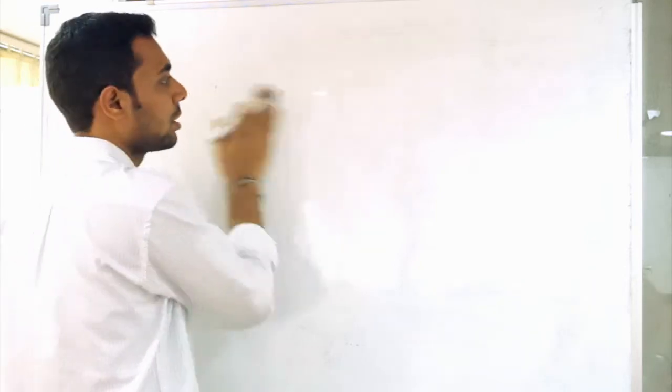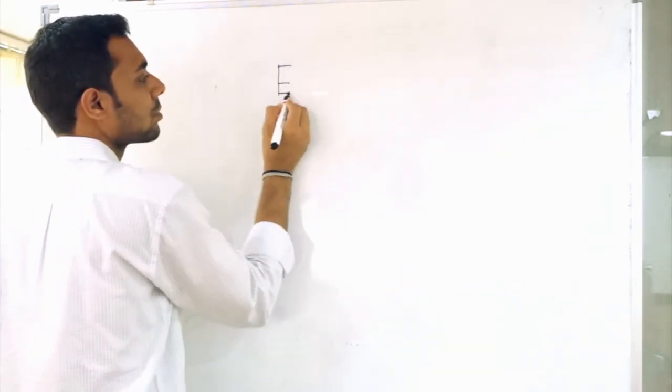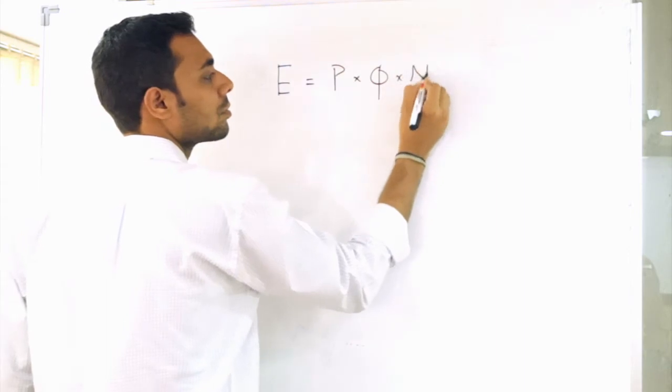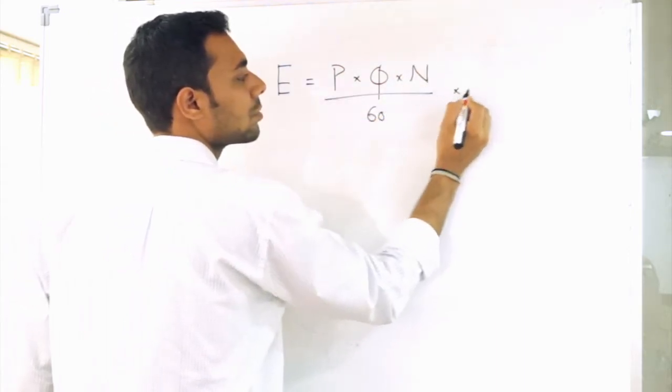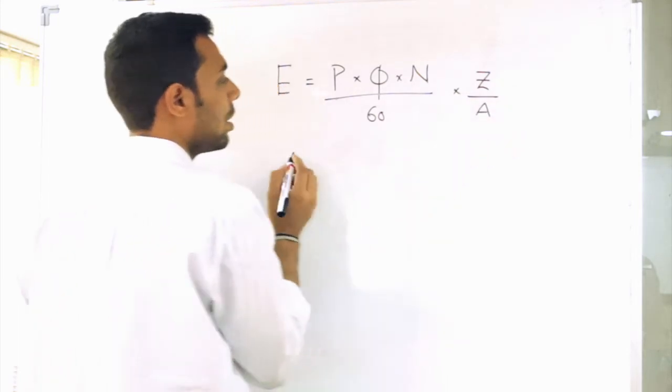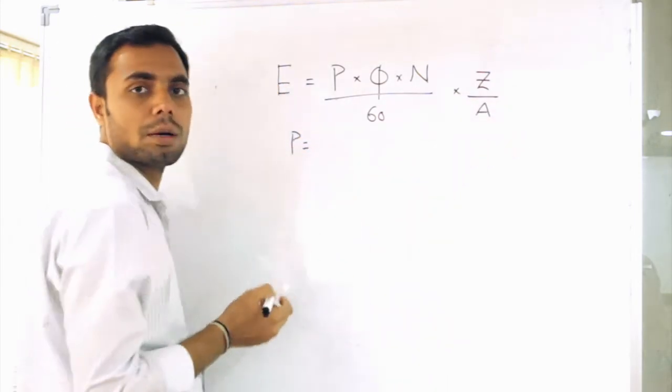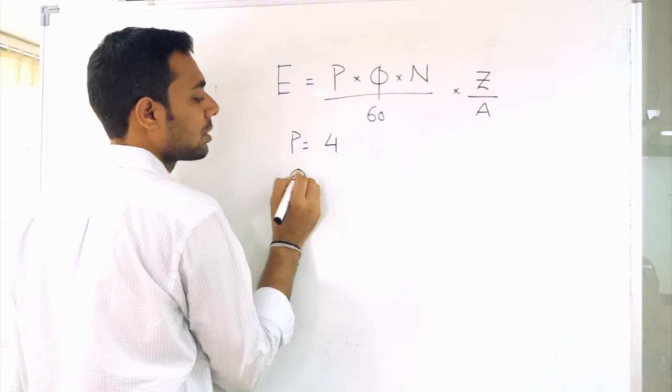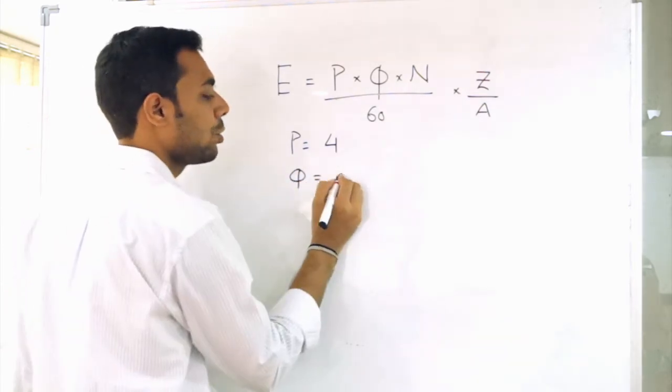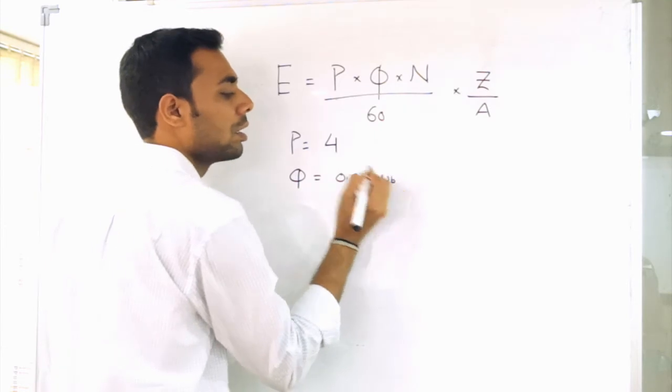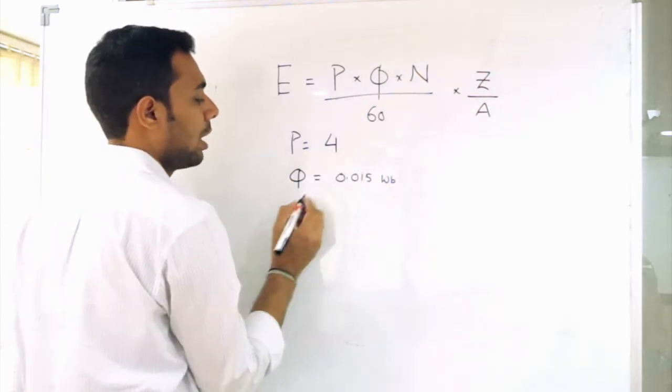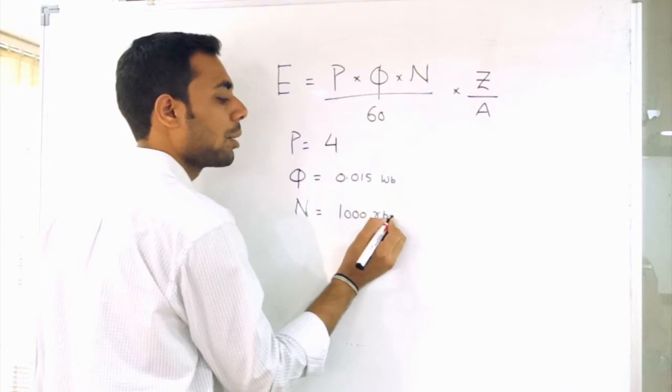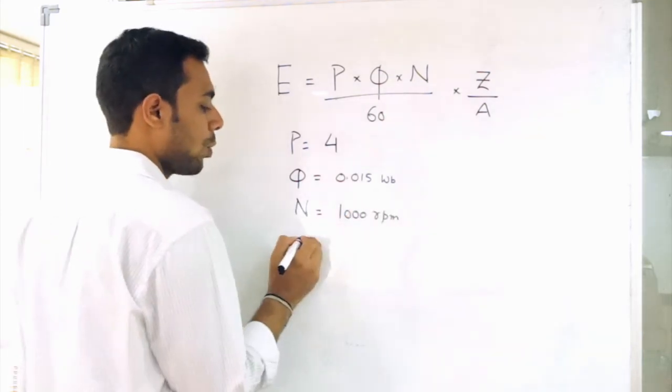So the question says P, the number of poles in the motor is 4, a 4 pole motor. Flux per pole is given as 0.015 Weber. Weber is the unit for flux. N speed has to be in RPM, so that is given as 1000 RPM. Now what is Z?